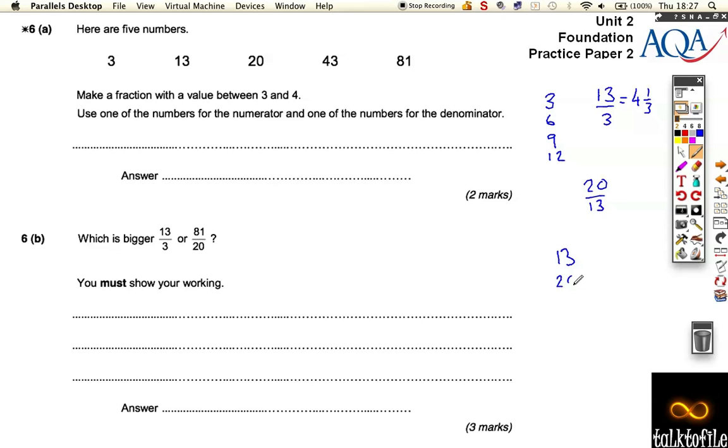13, 26, 39, and then it goes up to 52, doesn't it? So we've got 1, 2, 3, and our 43 is somewhere in between here, isn't it?